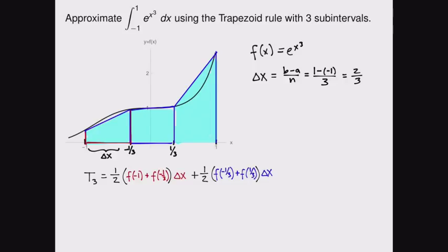Finally, we're going to do the rightmost trapezoid. One-half times the sum of the bases. And I'll do this one in green. So the left-hand edge is going to be right here, and the right-hand edge is going to be right here. And writing those out, we get f of one-third plus f of one. And again, the height is along the x-axis, and it's delta x.